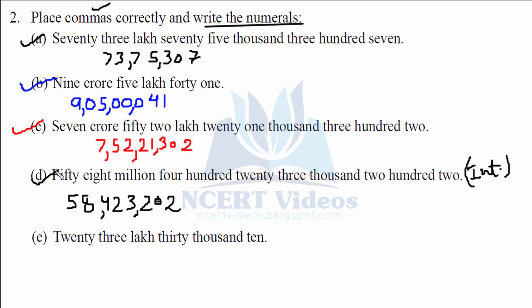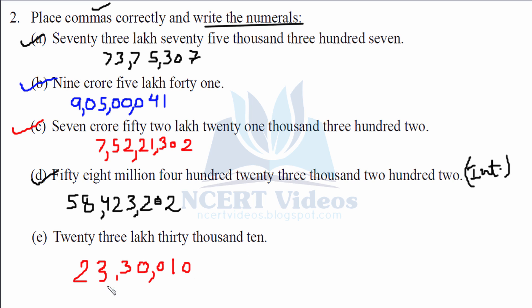Part e: 23 lakh 30 thousand 10. This is Indian because we are given lakhs. We write 23 lakh, then 30 thousand, the hundreds place is nothing because we are only at 10, so we write 010. Placing commas after three, two digits and so on. That gives you part e and completes question number 2.